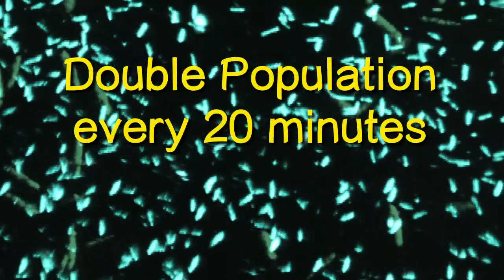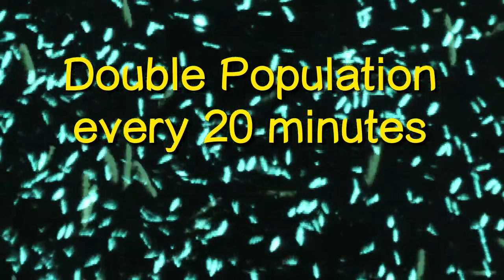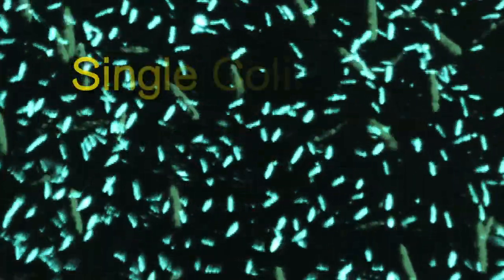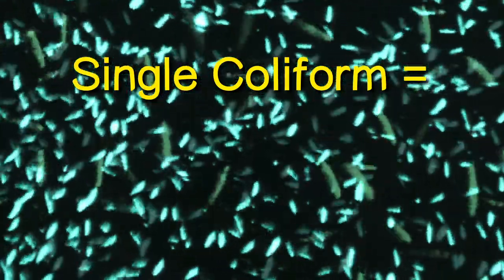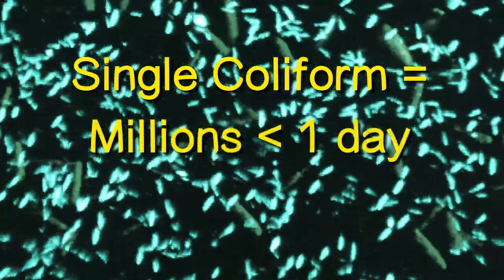In this environment, the bacteria will reproduce at a rate so as to double the population every 20 minutes. This means that a single coliform bacterium could give rise to a population of millions in less than a day.